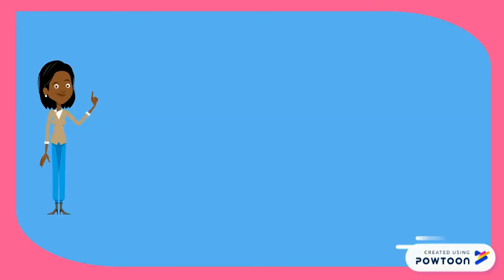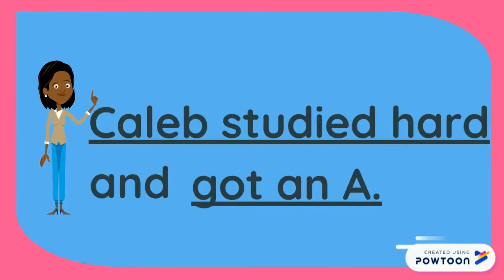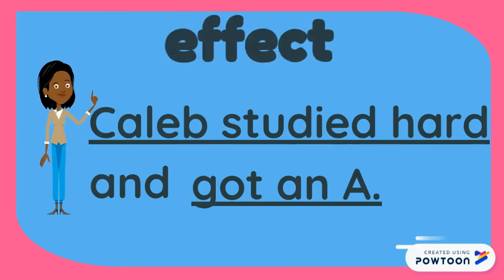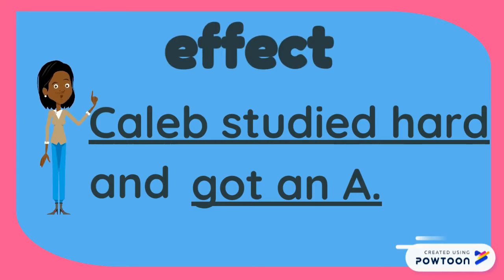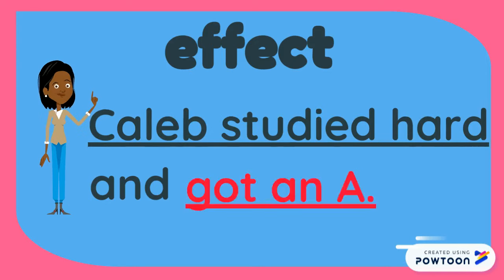Here's another. This sentence says: Caleb studied hard and got an A. What is the effect? What happened as a result of something else — Caleb studying hard, or Caleb getting an A? Yes. The effect was Caleb getting an A. He only got an A because he studied.